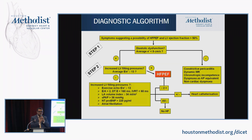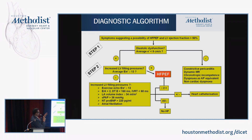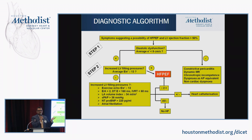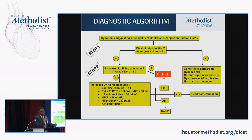This is a diagnostic algorithm for HFpEF that you might find useful. The first step is that you have to have symptoms consistent with heart failure. If you do an echo, you should have an ejection fraction greater than 50%. Then you move to tissue Doppler velocity to define diastolic dysfunction.